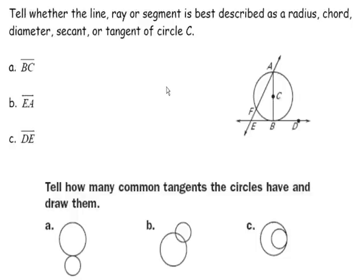Given those definitions, identify whether each figure is a radius (begins at the center and goes to the circle), a chord (two endpoints on the circle), a diameter (a chord through the center), a secant (a line intersecting a circle at two points), or a tangent (a line intersecting a circle at one point). Go ahead and write your answers, then come back to check. Hit pause now.